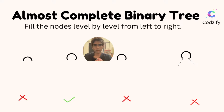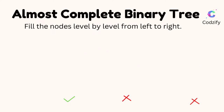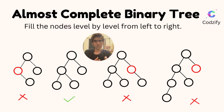The condition to satisfy an almost complete binary tree is to fill the nodes level by level from left to right. In the first example, the root node has two child nodes, and the left child node has one right node — so this is not an almost complete binary tree. In the second example, the nodes are filled level by level and from left to right. In the third example, level two's left part contains two nodes but the right part contains only a right node — the condition is not satisfied, since we must fill the left node before the right node.